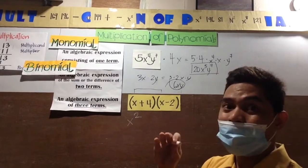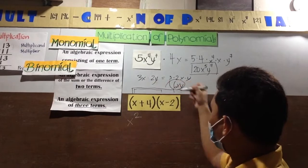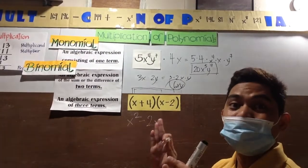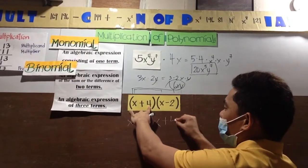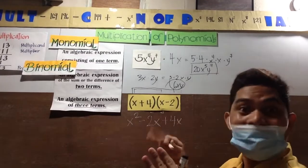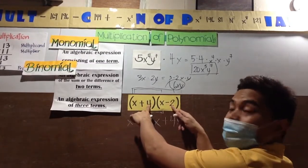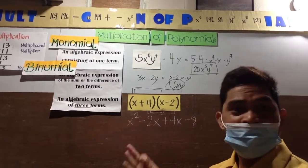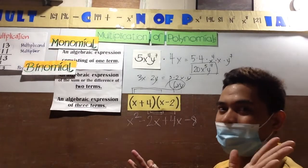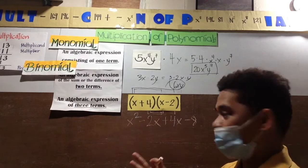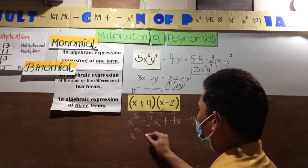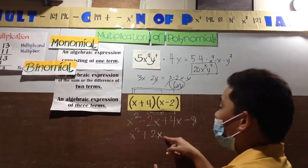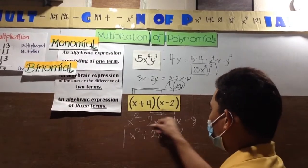Now the outer - x times negative 2 will be negative 2x. Then the inner part - 4 times x will be positive 4x. Then the last term of both, which is 4 times negative 2, will be negative 8. After you do the FOIL method, you need to simplify and combine like terms. So x squared, negative 2x plus 4x will be positive 2x, then bring down negative 8. This will be your final answer.